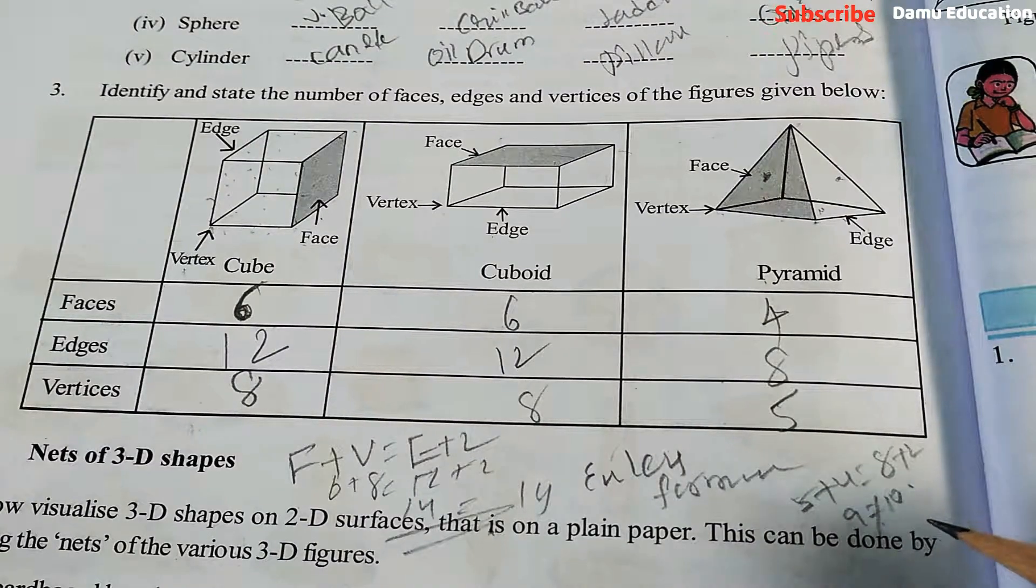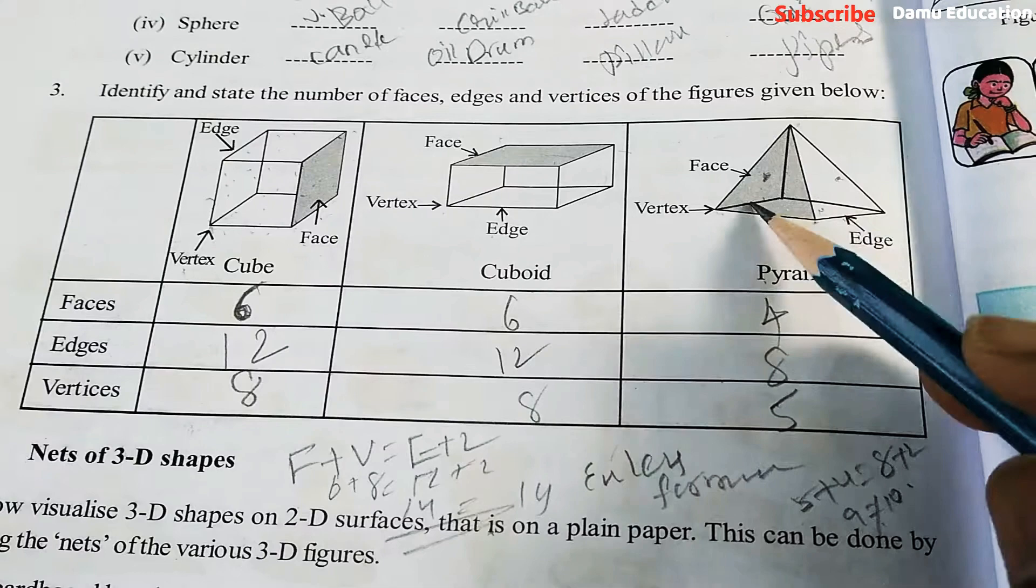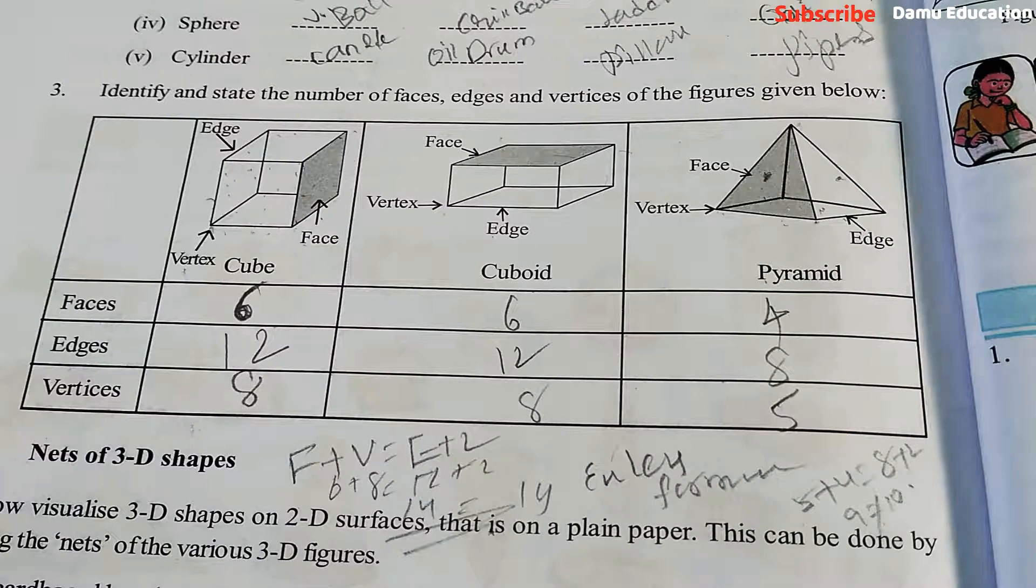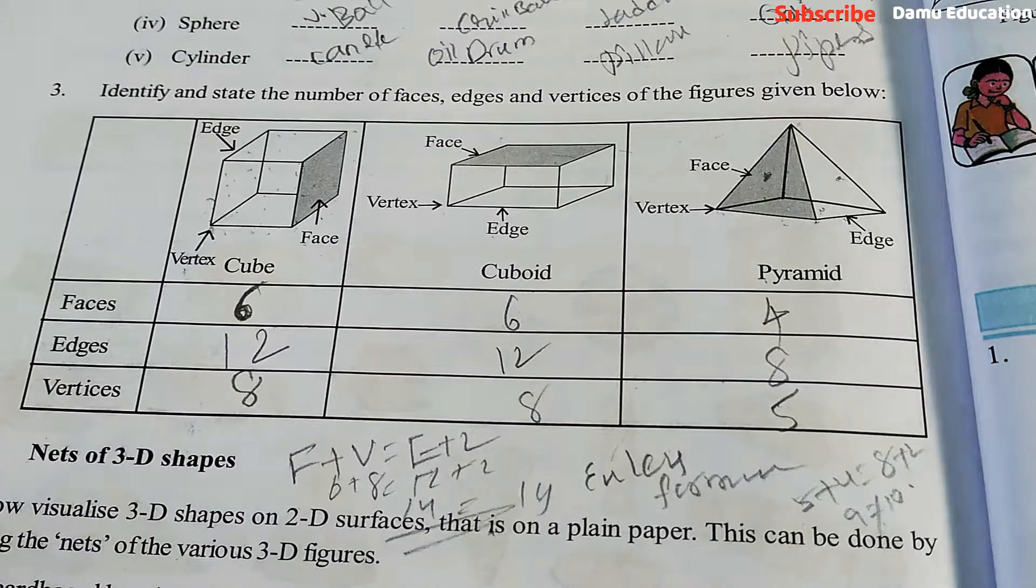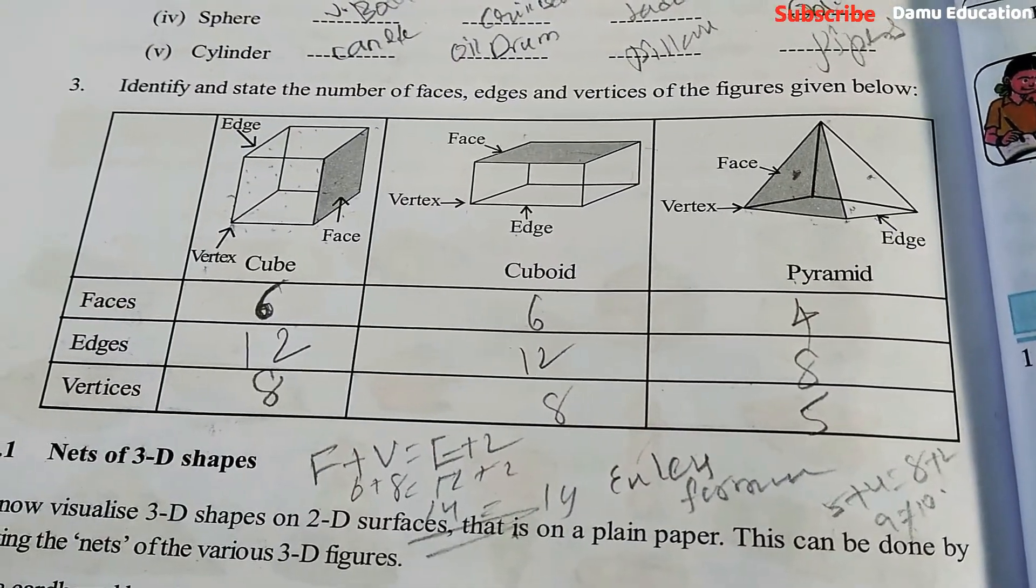For which shapes is Euler's formula applicable? Here edges: one, two, three, four, five, six, seven, eight. Euler's formula is only applicable for polygon shapes which have no curves and faces correctly. Thanks for watching this video. You can watch more videos on YouTube and Damu Education.